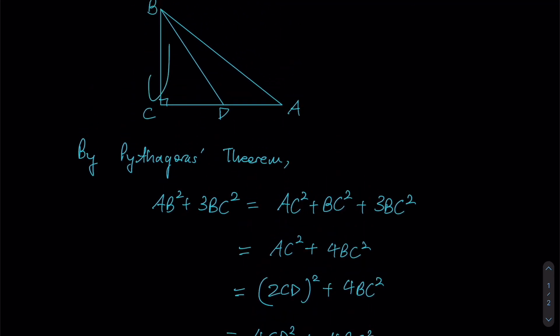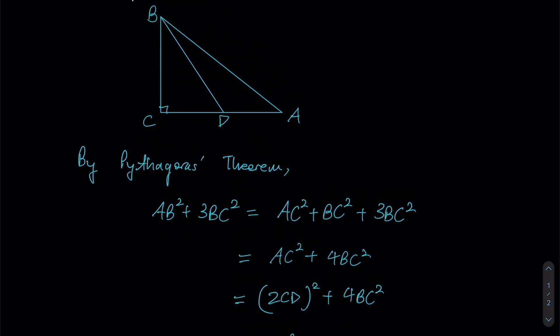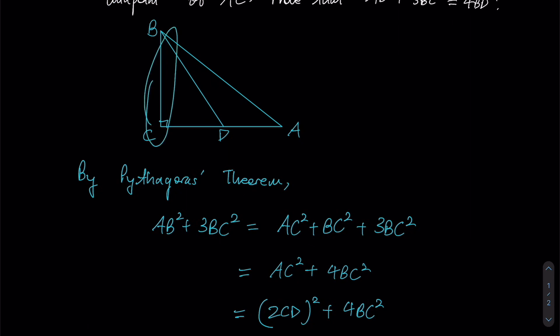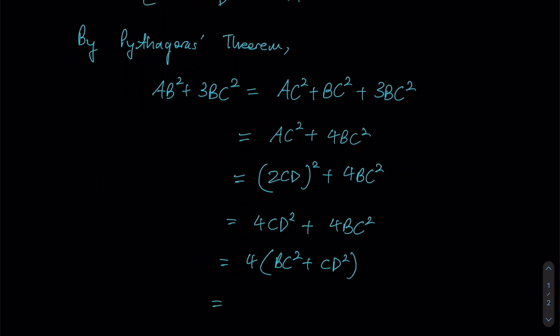We have drawn, BC and CD—since both of them are perpendicular—by Pythagoras' theorem, BC² plus CD² should give us the hypotenuse squared, which would therefore be BD².